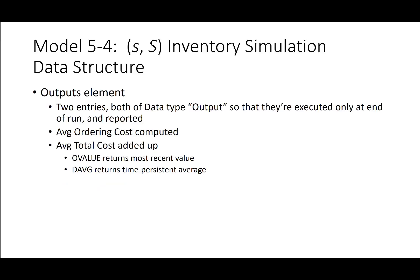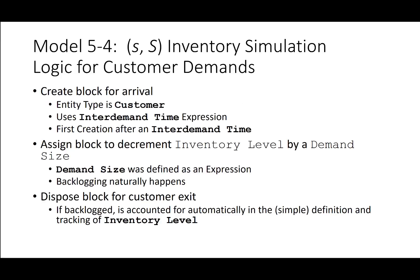The outputs element has two entries of data type output, executed and reported only at the end of the run: average ordering costs computed, and average total costs added up. O_VALUE returns the most recent value and DAVG returns the time-persistent average. For customer demand logic, a create block generates arrivals using the entity type 'customer,' inter-demand time expression, with first creation after one inter-demand time. An assign block decrements inventory level by demand size, and backlogging happens naturally. A dispose block handles customer exit.